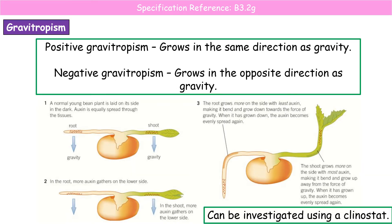Gravitropism is the response to gravity. Positive gravitropism grows in the same direction as gravity — i.e., down into the ground. Negative gravitropism grows in the opposite direction to gravity, so up into the sky.